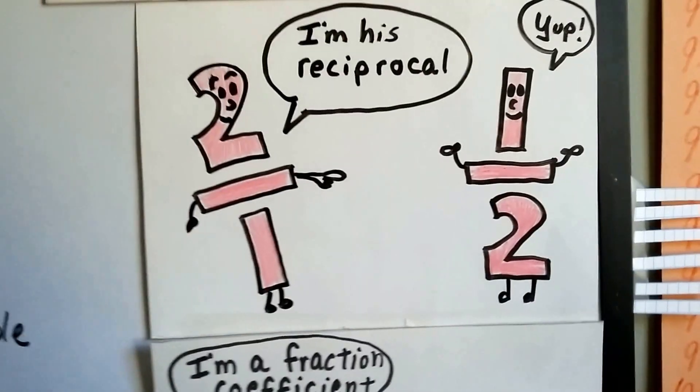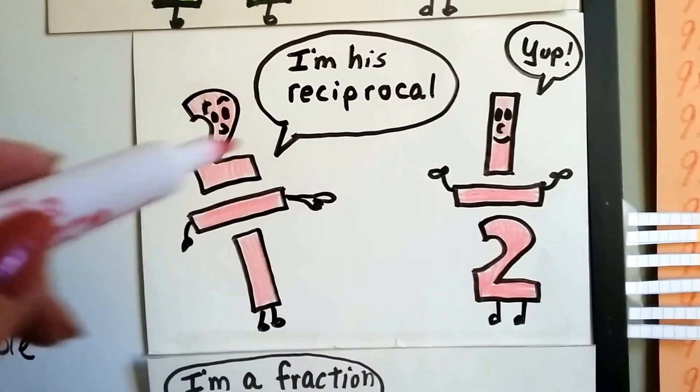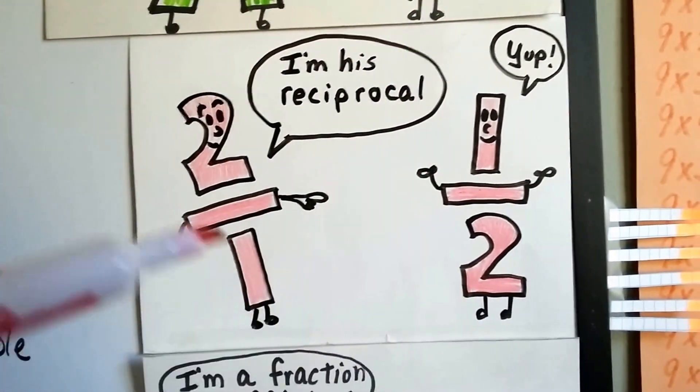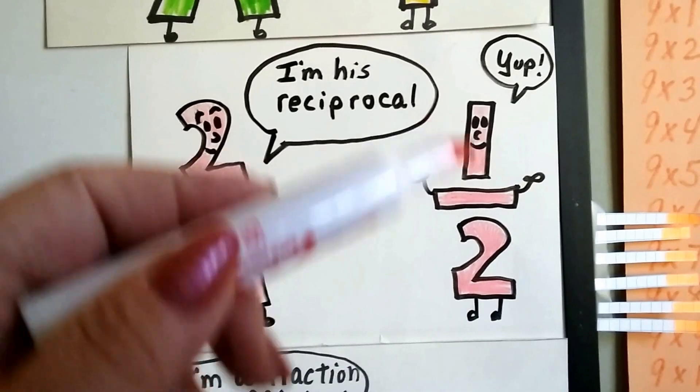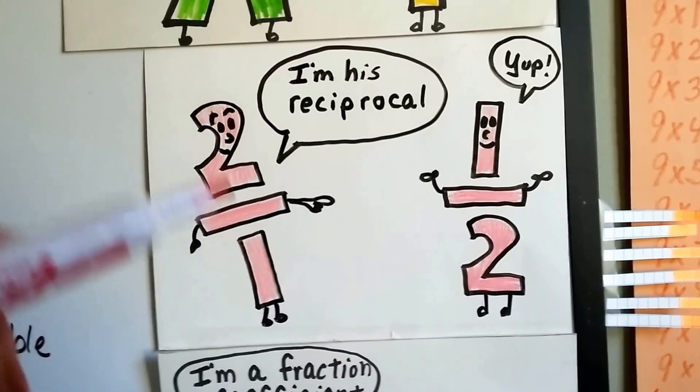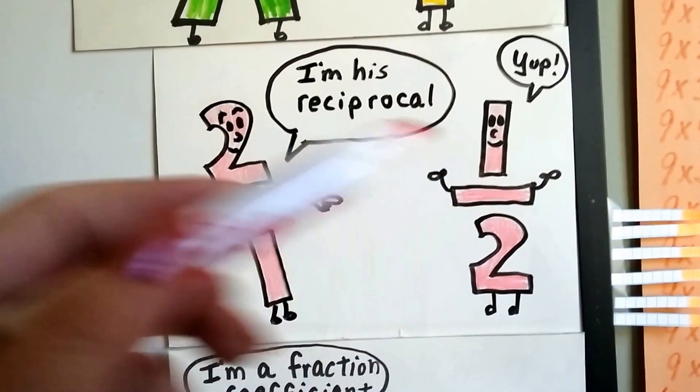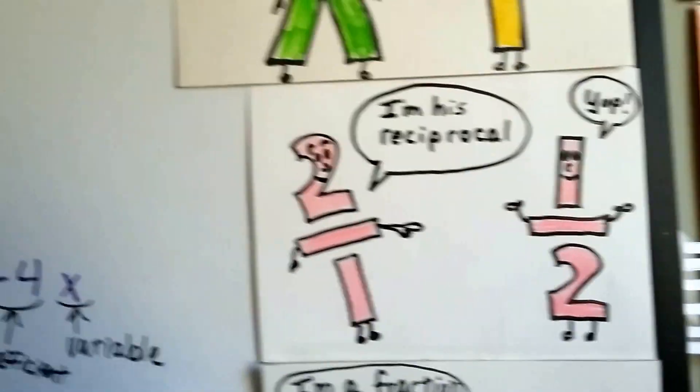Look at my little cartoon guys here. You just flip around the numerator and denominator. So the reciprocal of a half is 2 over 1. The reciprocal of 2 over 1 is a half. It's just flipped around.